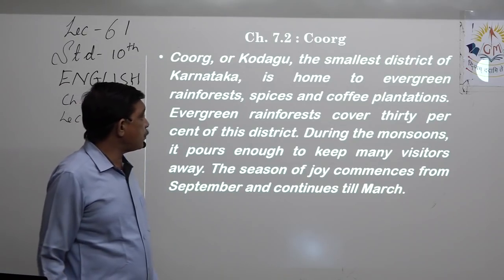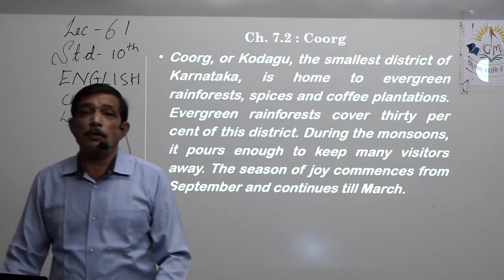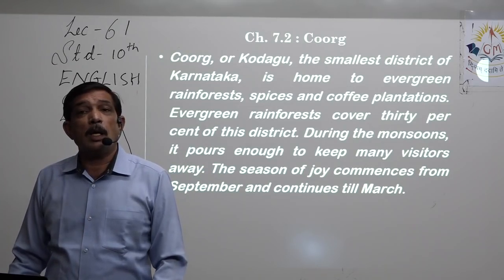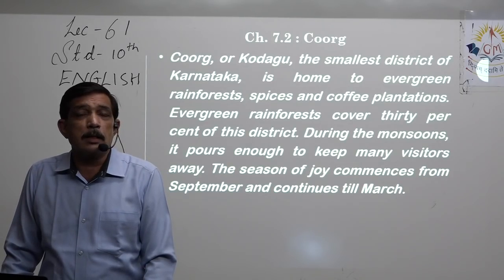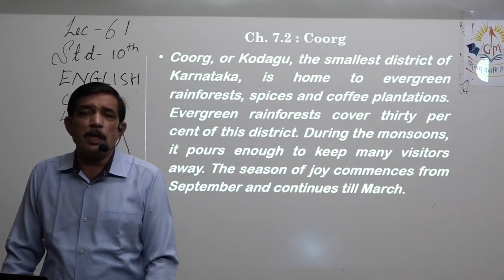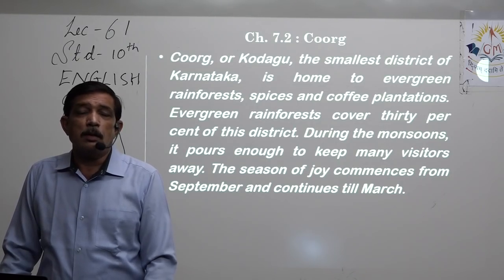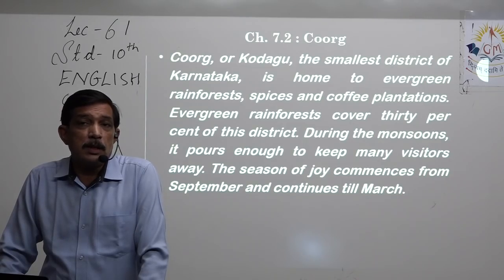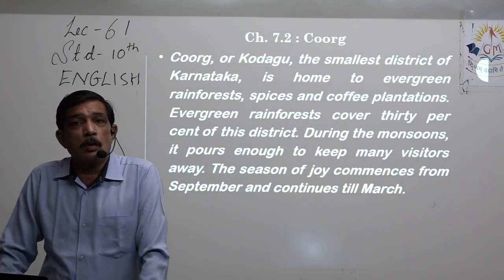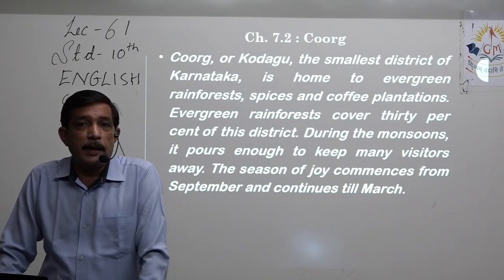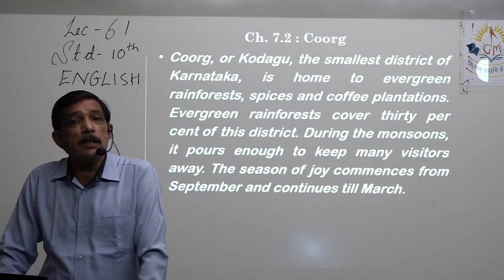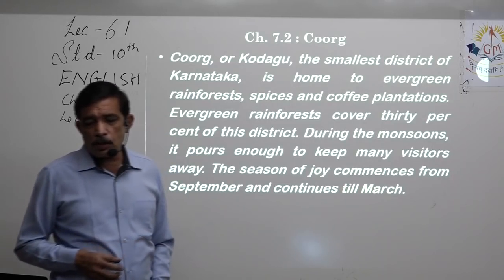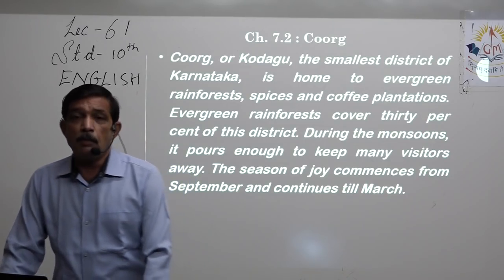During the monsoon it pours enough to keep many visitors away. Water rushes from everywhere, making it impossible to drive vehicles - roads disappear at many places and driving becomes impossible because you cannot see the curves in the hills. Visitors keep away during the monsoon season as it gets quite rough. The season of joy commences from September and continues till March.